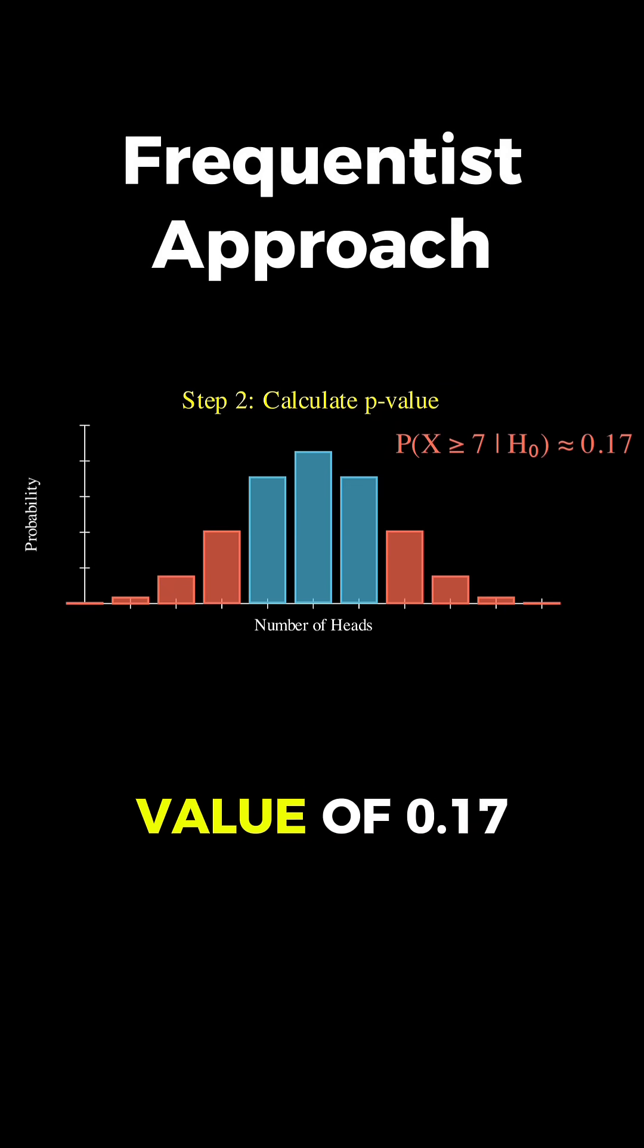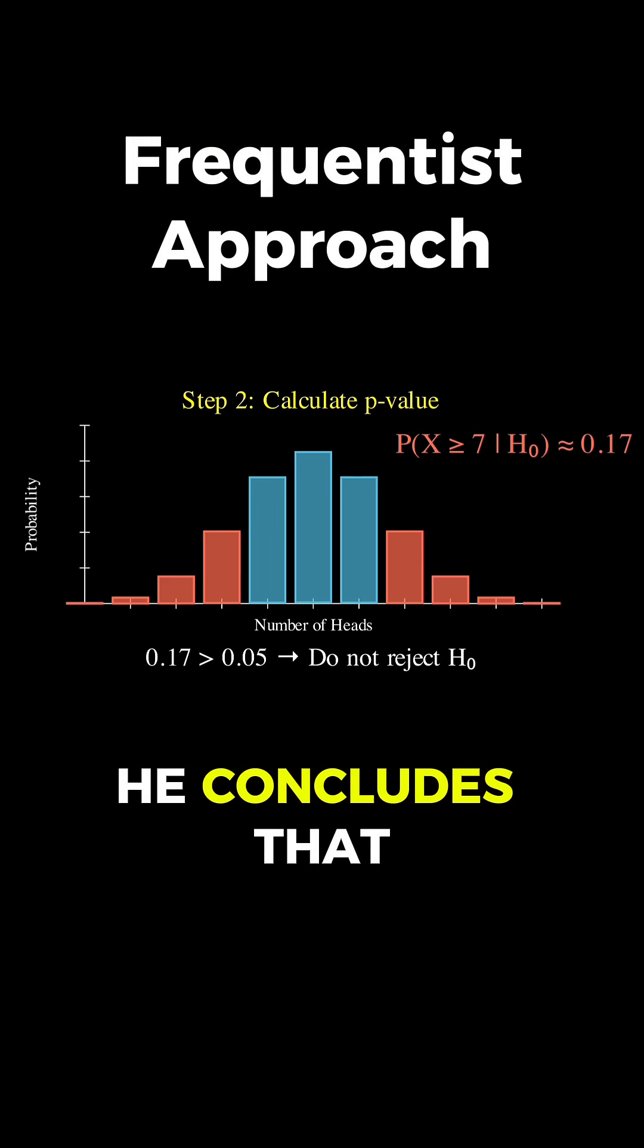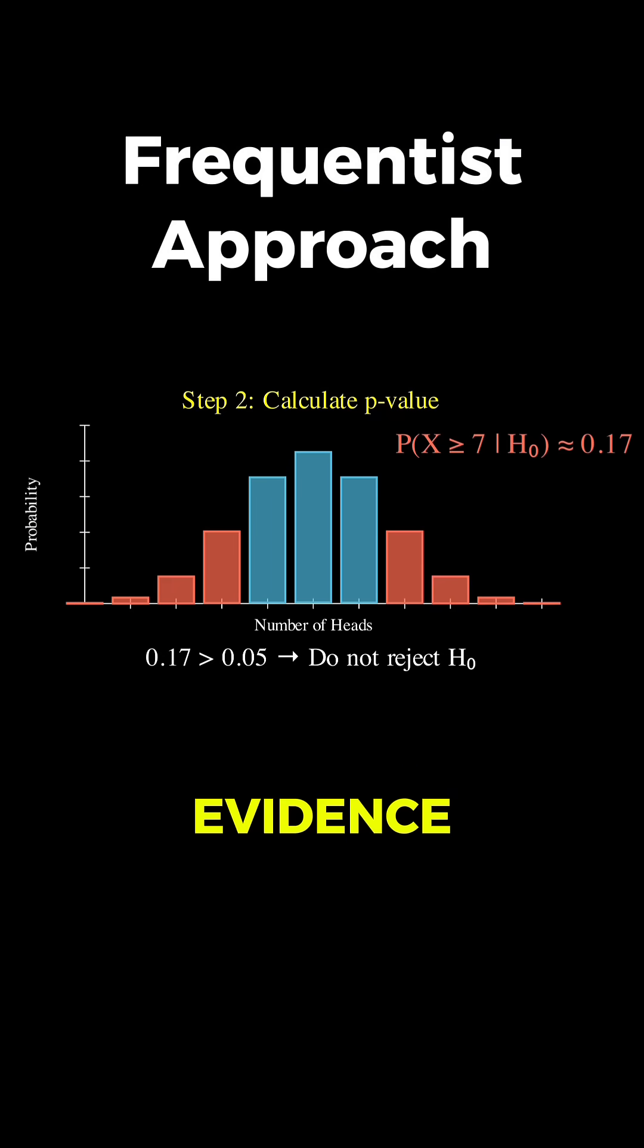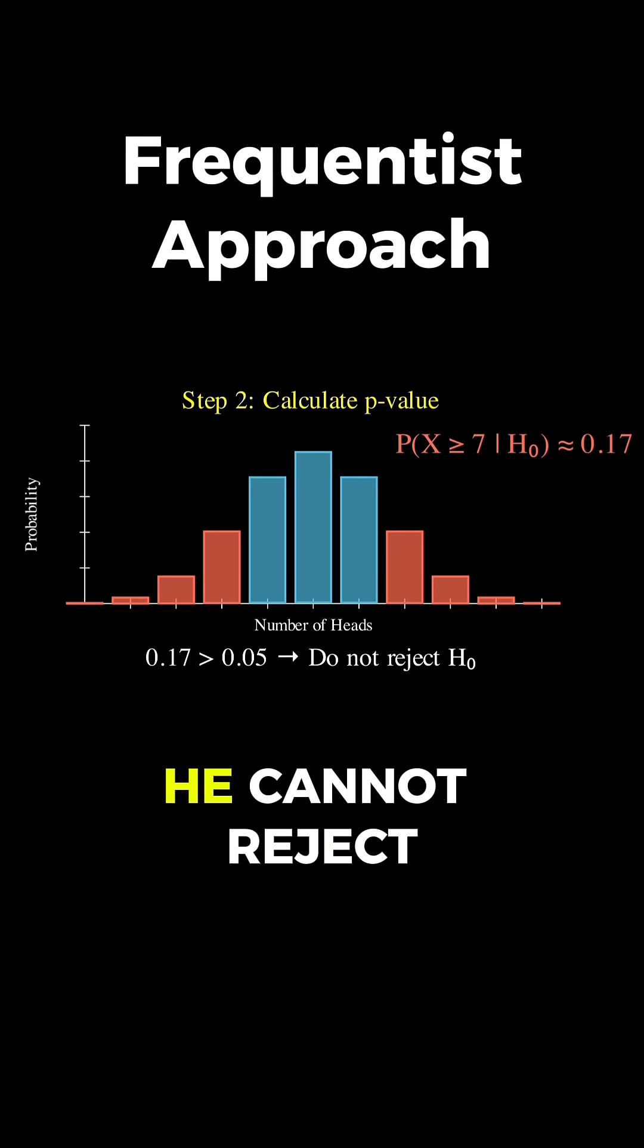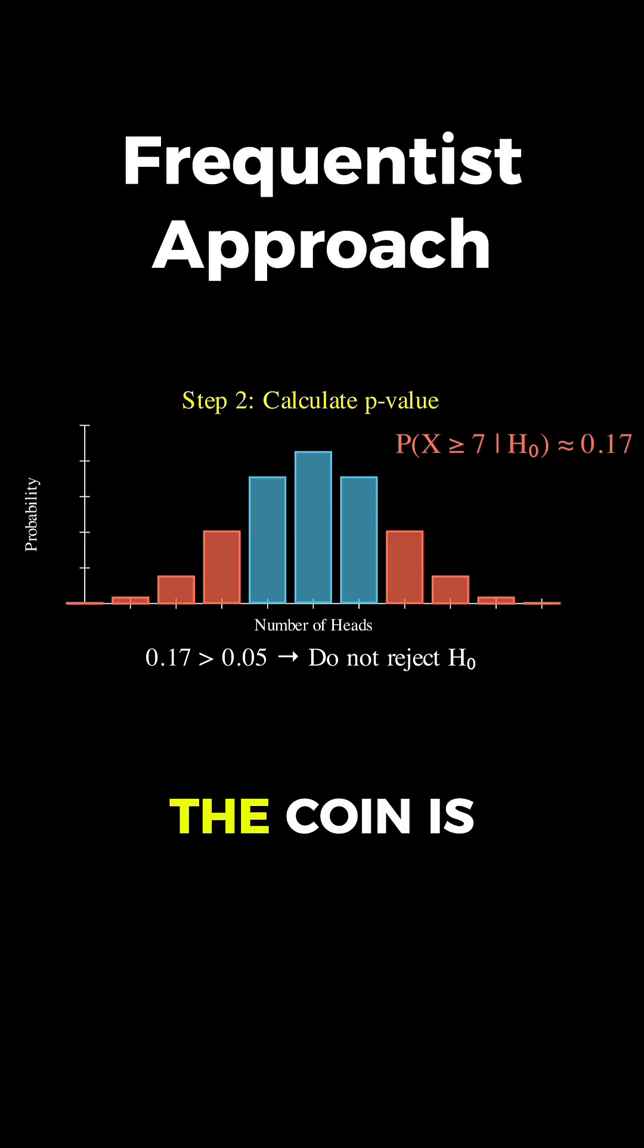Since this p-value of 0.17 is greater than the conventional threshold of 0.05, he concludes that there isn't strong evidence against the null hypothesis. In other words, he cannot reject the idea that the coin is fair.